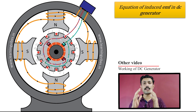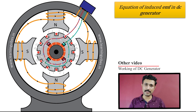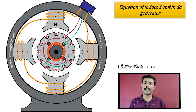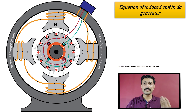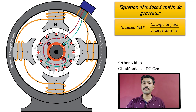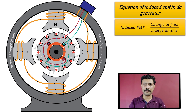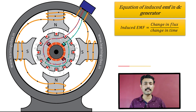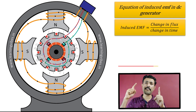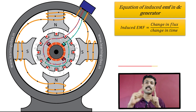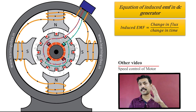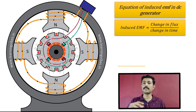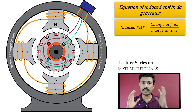To know the amount of induced EMF in the armature conductor, we are going to use the fundamental law — the law of electromagnetic induction. According to that law, the fundamental equation of induced EMF is: induced EMF is equal to change in flux divided by change in time. This equation means that in one conductor, if some changing flux is linked, then in that conductor EMF will be induced. So let's use this law to derive our equation.